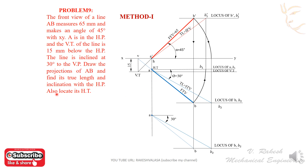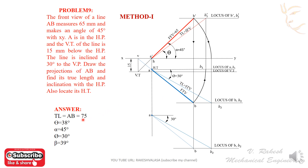Also locate its traces. Draw the perpendicular line from H to the final top view — it is the HT. In this problem, HT and a coincide. The initial front view makes an angle theta. Answer: true length — in this problem, find its true length and inclination with HP. True length equals 75 mm. Theta — inclination with HP — is 38 degrees. Alpha is 45 degrees, phi is 30 degrees, beta — the final top view angle with XY — is 39 degrees.